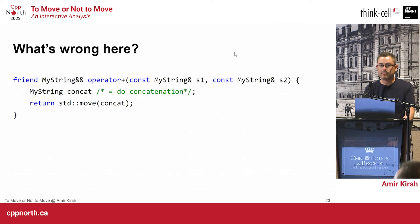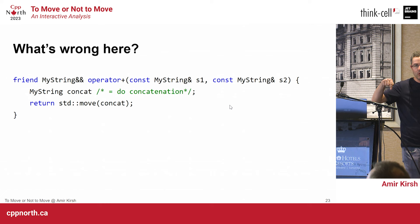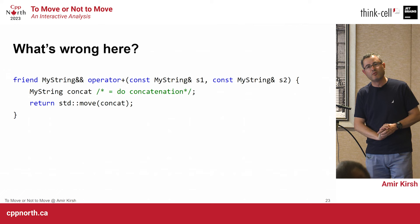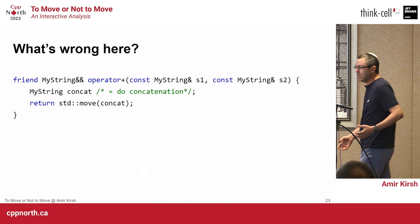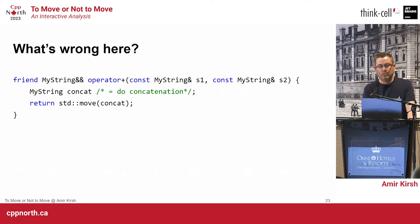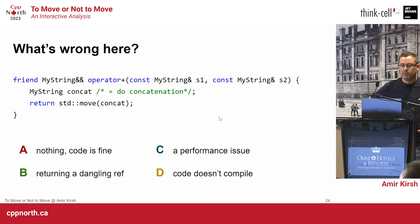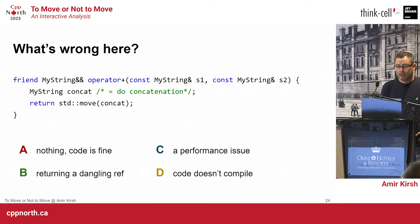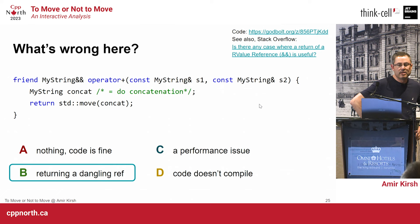What's wrong here? I have a function concatenating two strings. I'm using MyString instead of std::string so I can trace calls to copy constructor, move constructor, destructor, etc. I'm doing some concatenation and then moving the result out since the string was created inside the function. The answers are: nothing, the code is fine; returning a dangling reference; a performance issue; or the code doesn't compile.